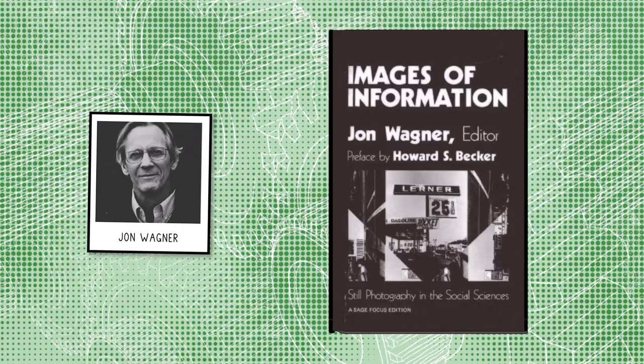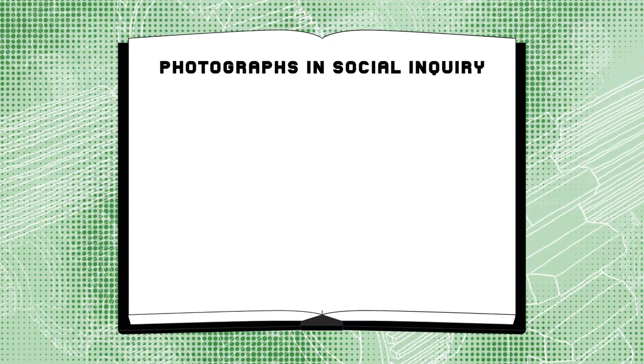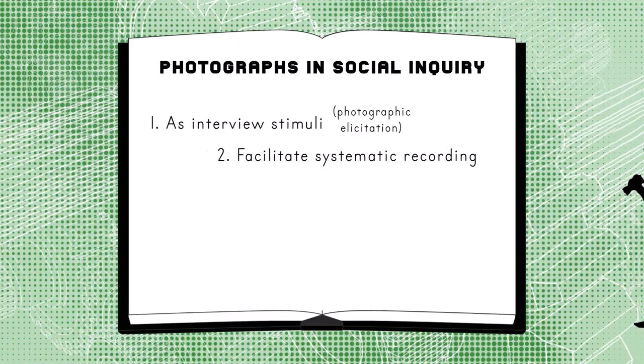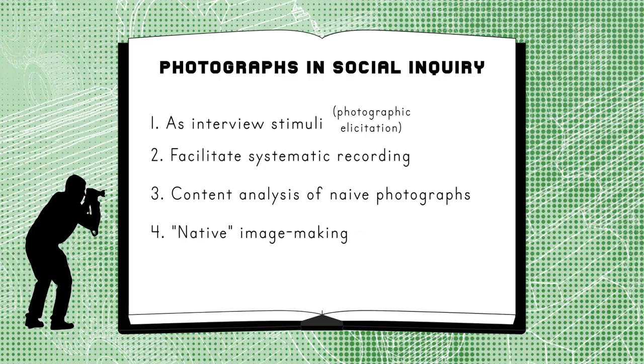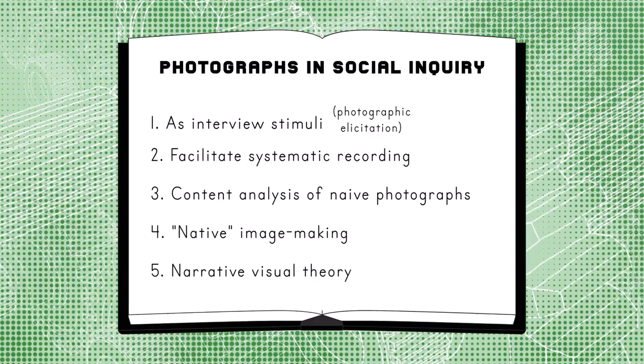John Wenger presents one of the first typologies of the ways photographs can play a role in social inquiry. Namely, they can serve as interview stimuli, also known as photographic elicitation. They can facilitate systematic recording of social phenomena. Naive or existing photographs can be treated with content analysis. In native image-making, one can teach a population to take photographs and then study their outputs. In narrative visual theory, the researcher creates photographs to illustrate social theories.